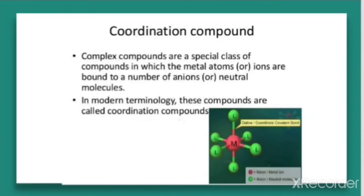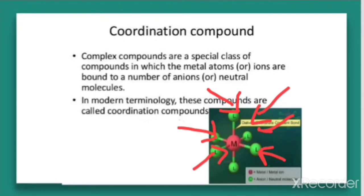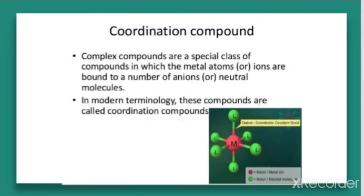Coordination compounds are special type of compounds in which the metal atom or ions are bound to a number of anions or neutral molecules. As we can see in this figure, the metal atom is surrounded by some neutral or anionic molecules which are coordinately bonded to the metal. Such compounds are called complexes, and in modern terminology they are called coordination compounds. First, we will be introducing the different terms which we will be using in this chapter.